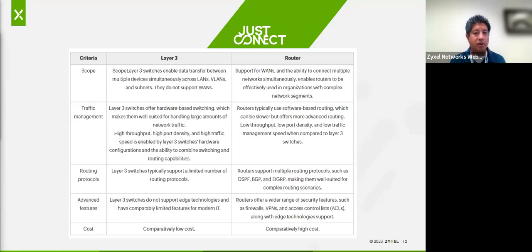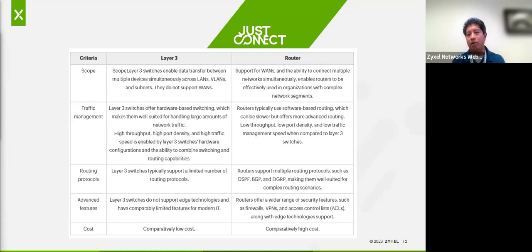Layer 3 switches typically support a limited amount of routing protocols — I mentioned RIP and OSPF — but it's more limited. Whereas routers have BGP, IGRP, and others for any kind of routing scenarios you need within the network.